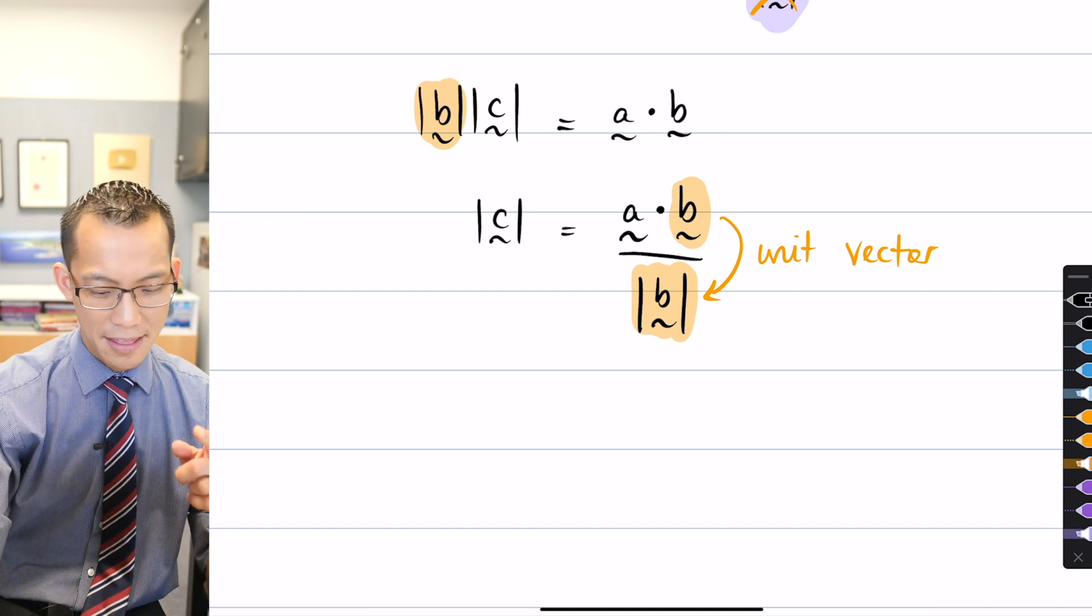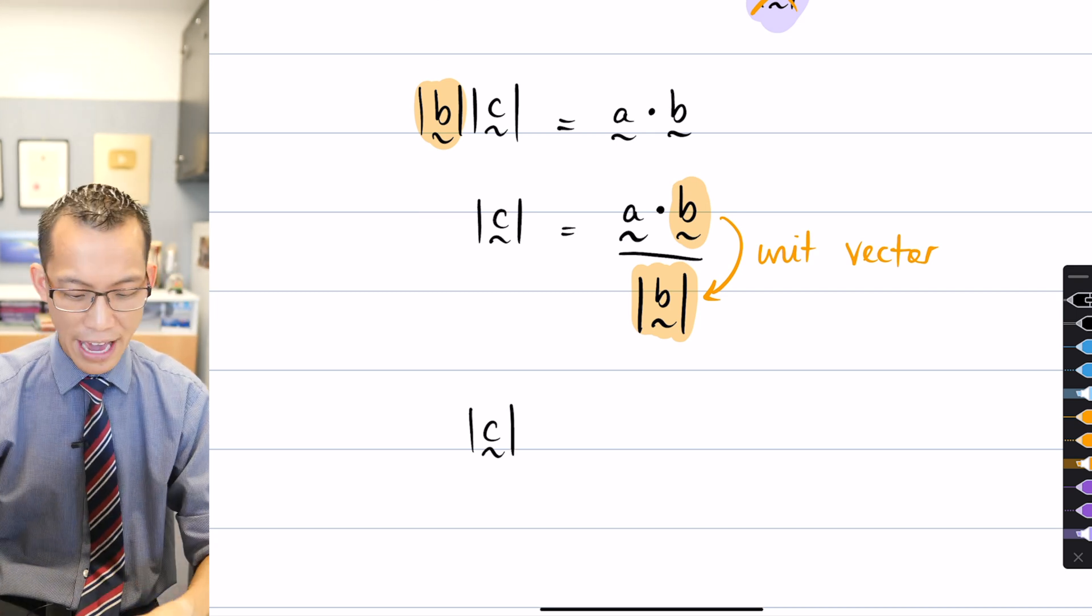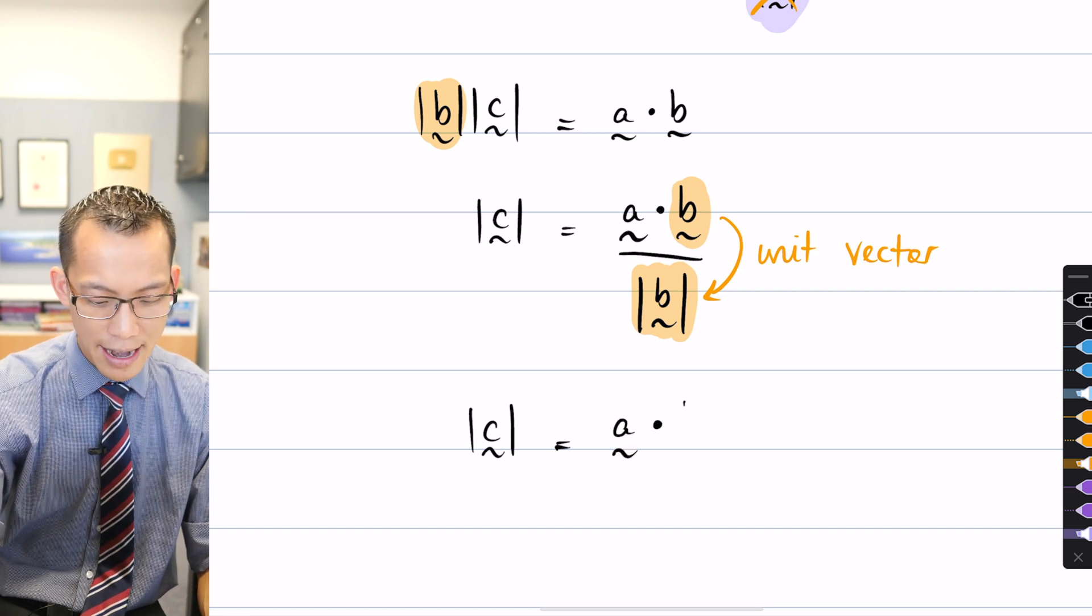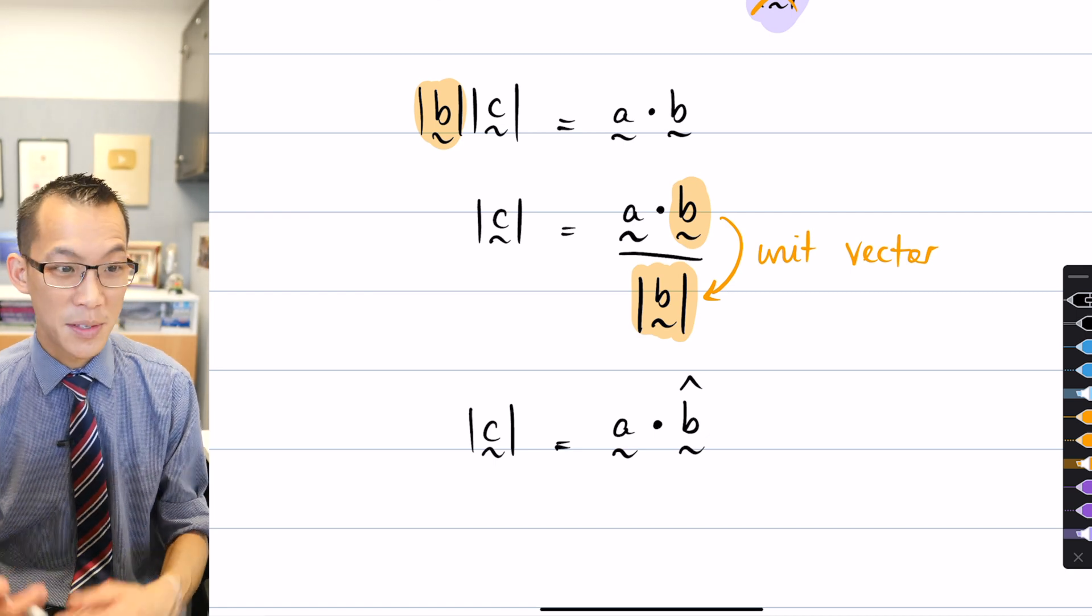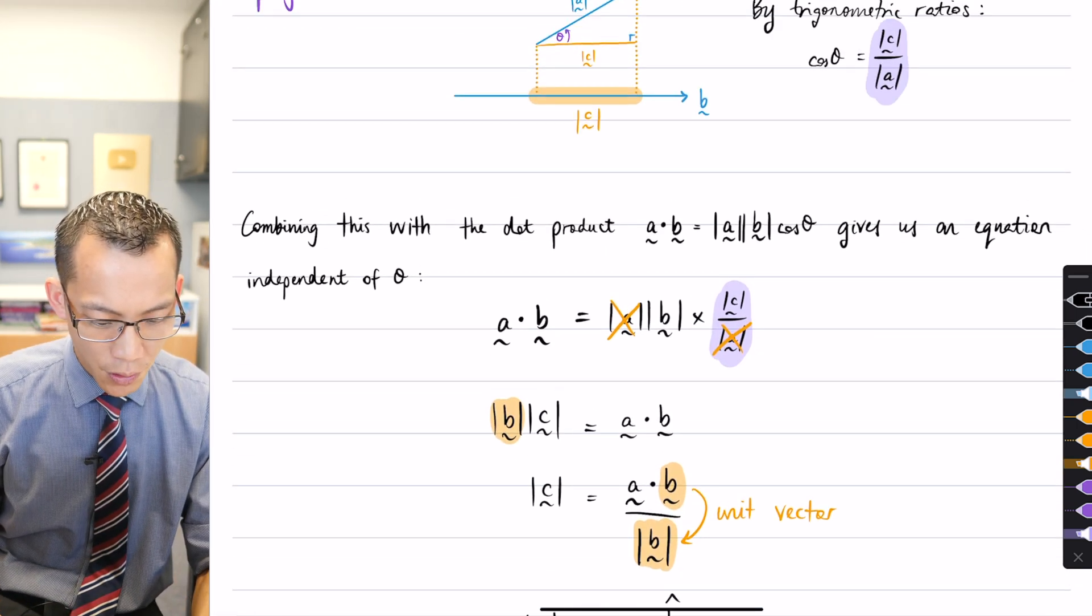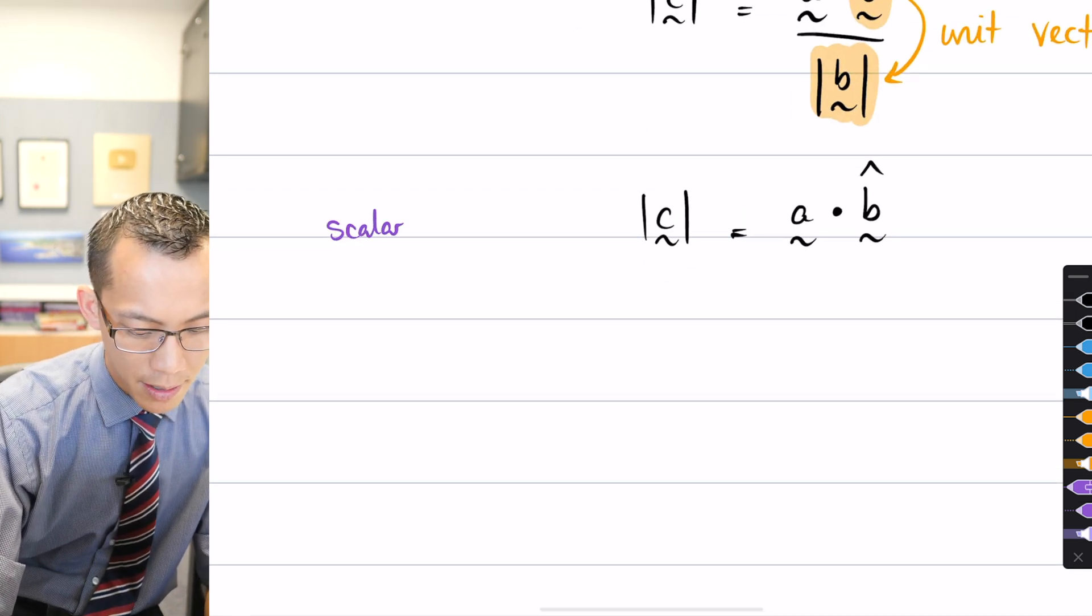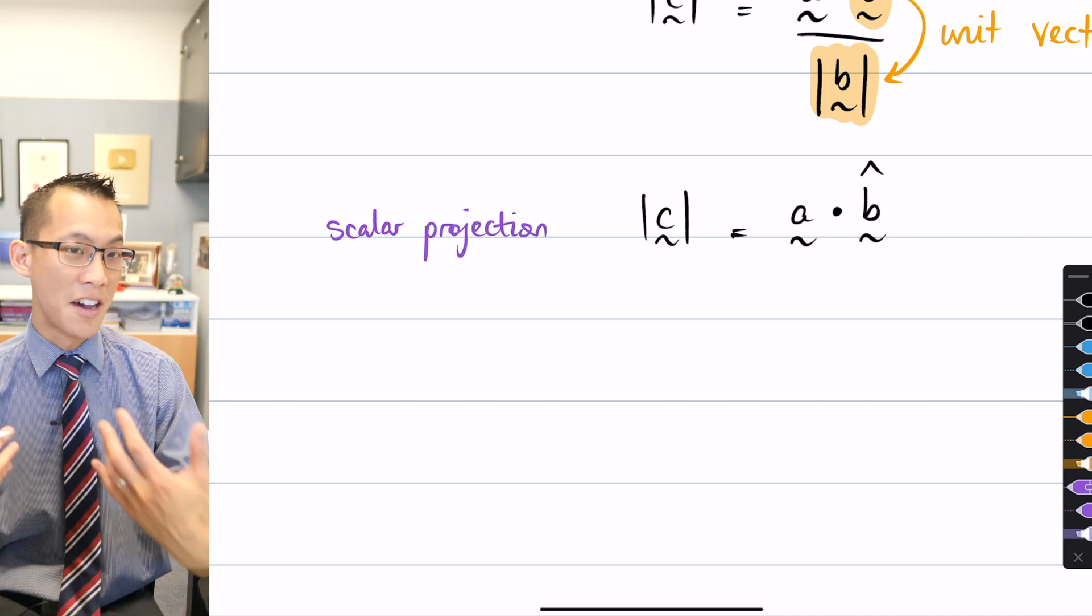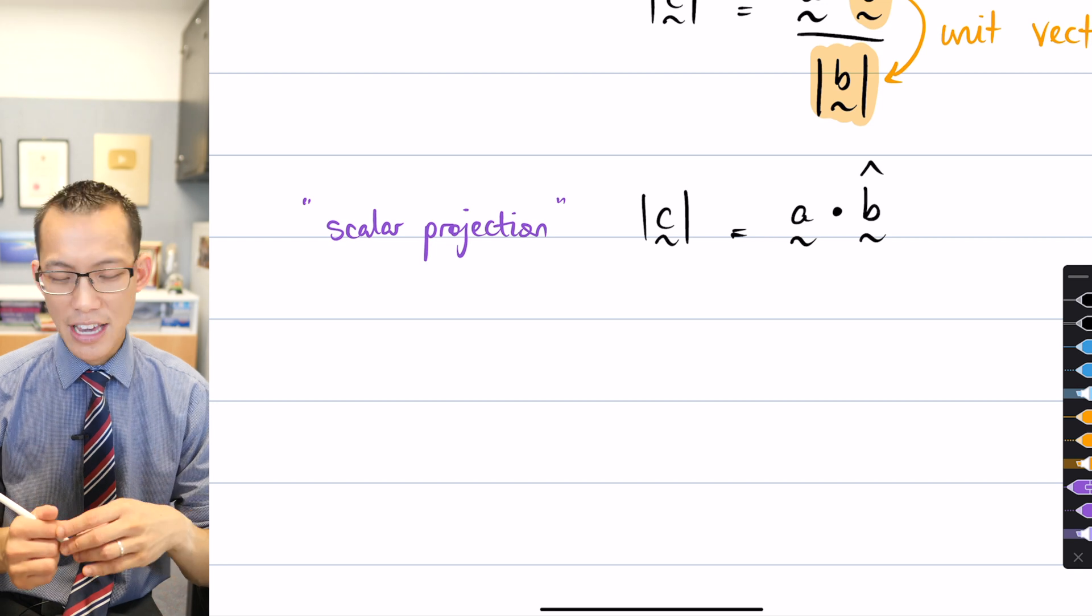So what I can do is I can say, all right, this scalar projection, the length of the shadow, the magnitude of C, they're all the same thing. What that's equal to is A dot, and if you remember, we write the unit vector as the same as B, but with a hat over the top. Okay. So there's the unit vector there. So this thing here is what we were describing before. Where did I write it? Yes, I wrote it in purple. This thing is what we call the scalar projection. Remember when you do this dot product, all you get is a number at the end, right? And this particular number, this scalar number is the length of that shadow. Okay.